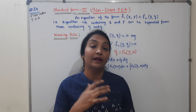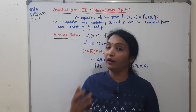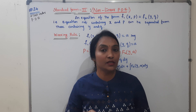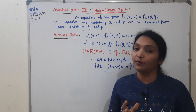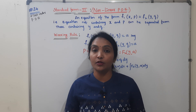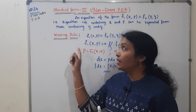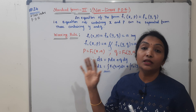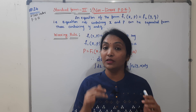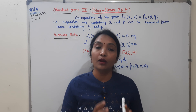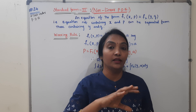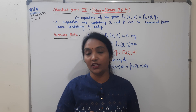Now, what is the order — elimination of functions and arbitrary constants, types of partials? Linear, Lagrange, non-linear — there are 6 types. This is the 3rd standard form. Today we are going to discuss Standard Form 3 in non-linear, after talking about the first, second, and third.